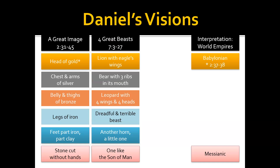We believe that this 'one like the Son of Man' is the name that the Lord Jesus most often took for himself, pointing to this messianic prophecy — one like the Son of Man coming to the Ancient of Days, receiving a kingdom that would never come to an end. The Lord Jesus is the one who has come to establish that messianic kingdom. These two visions are talking about world empires and this messianic kingdom that will someday come — an earthly, political kingdom over which the Messiah, the Lord Jesus Christ, will reign and bring in justice, righteousness, and peace.